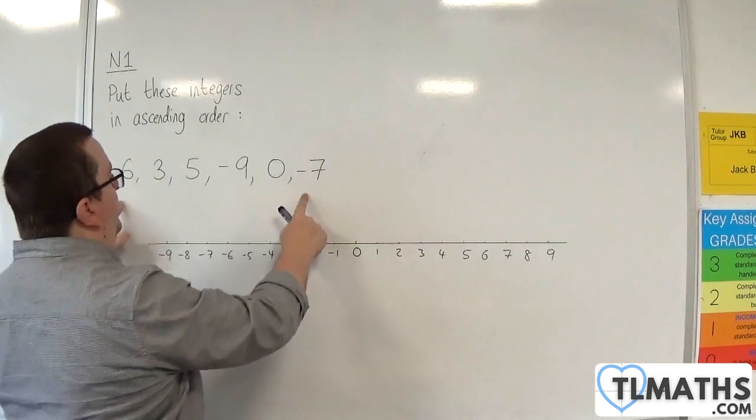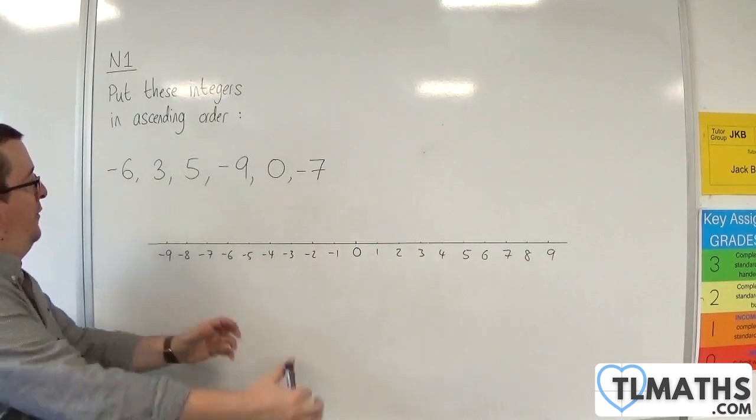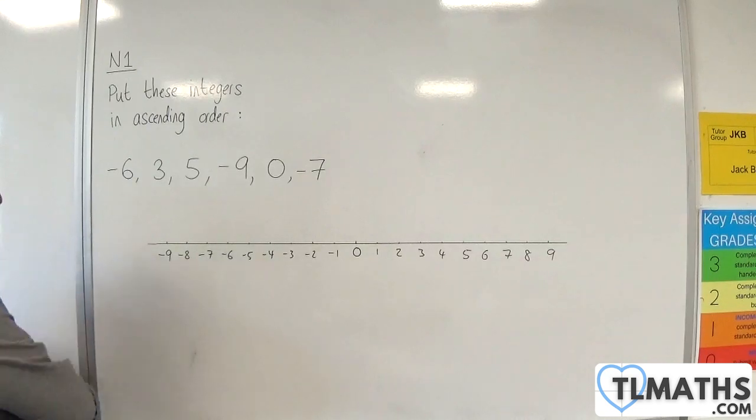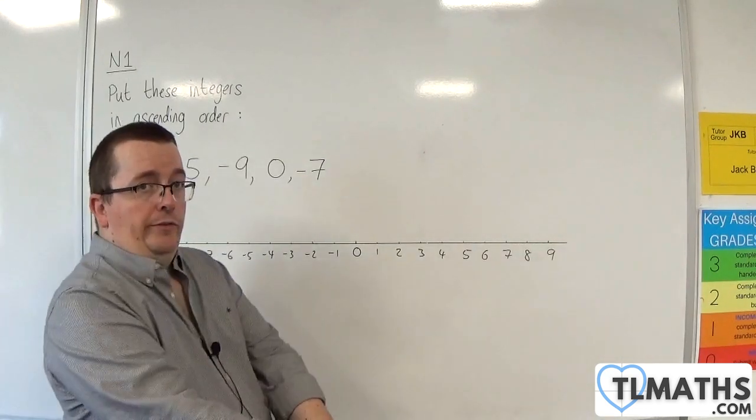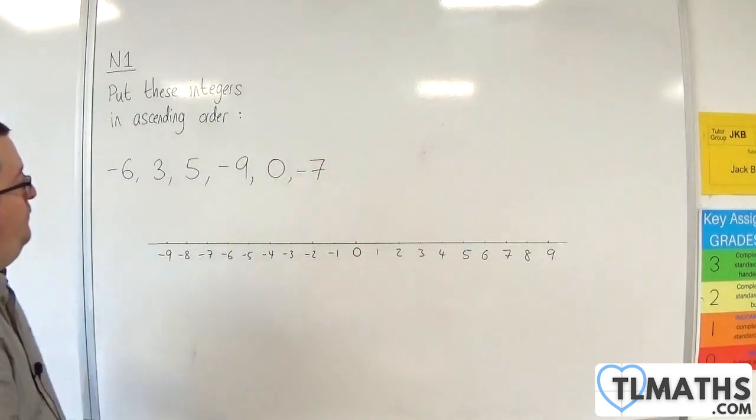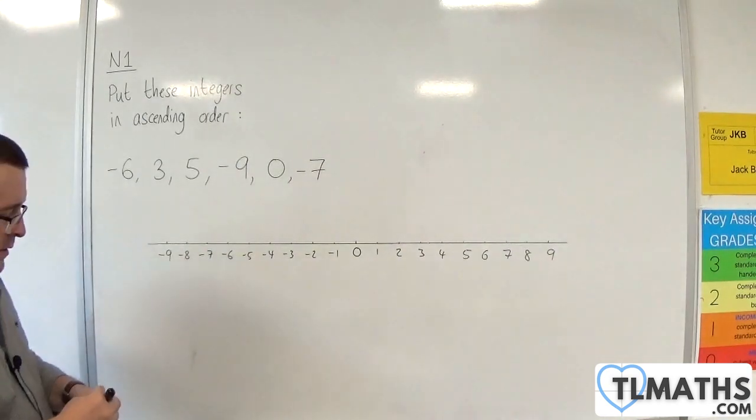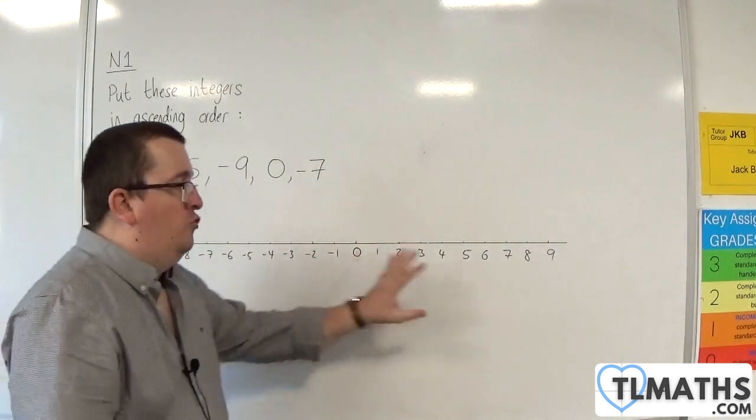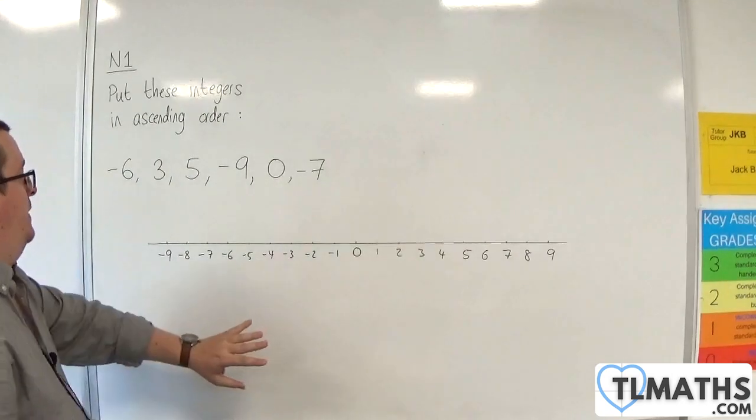So, if we want to put these numbers into ascending order, we want to go from the smallest to the largest. If you like, you can always draw out a number line to help you when you do this.